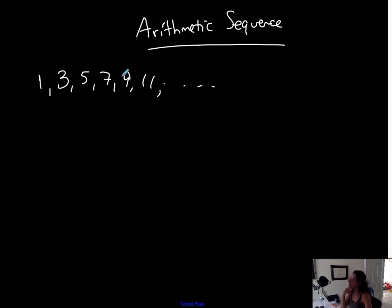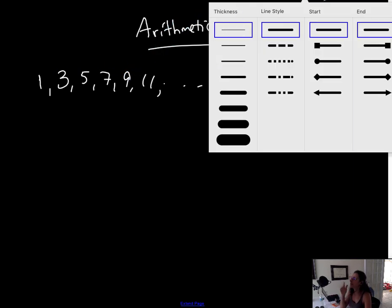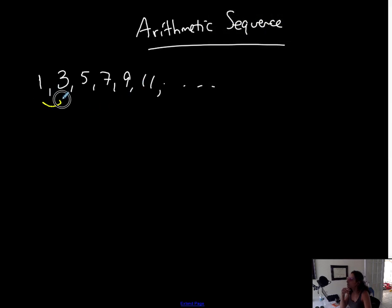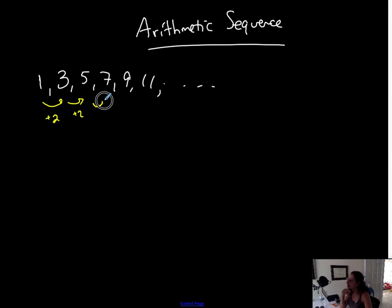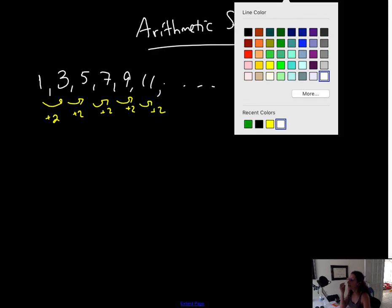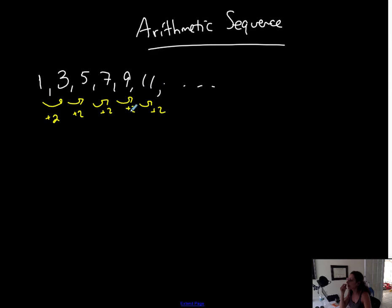So this is a sequence and it's a sequence with a particular pattern. The pattern shows that I'm adding a number to each term to get to the next one, but I'm adding the same number to each term to get to the next one. I'm staying consistent with that throughout the actual sequence. So there is a pattern and the pattern, when that happens, is the fact that it's an arithmetic sequence.